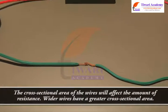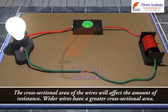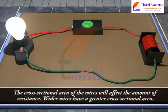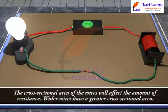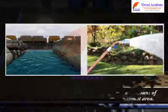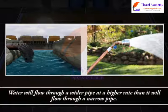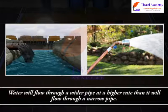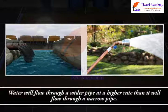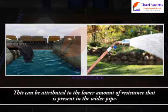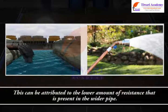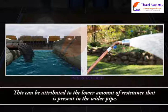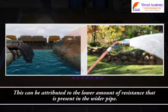The cross-sectional area of the wires will affect the amount of resistance. Wider wires have a greater cross-sectional area. Water will flow through a wider pipe at a higher rate than it will flow through a narrow pipe, which can be attributed to the lower amount of resistance present in the wider pipe.